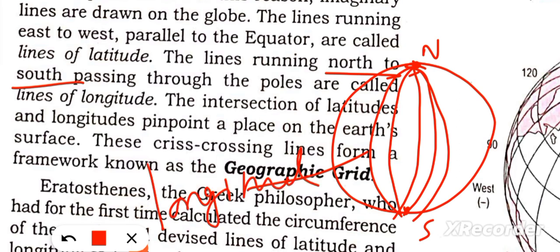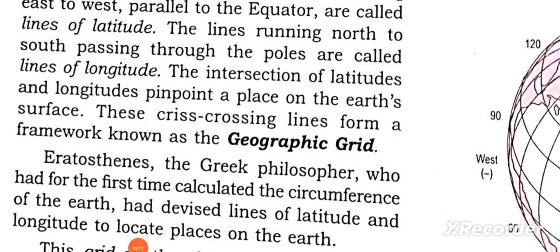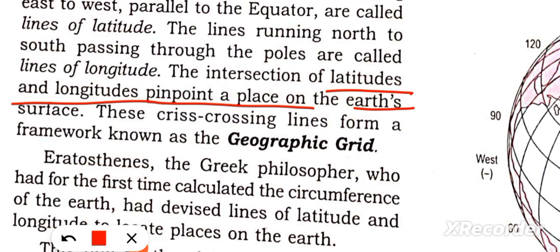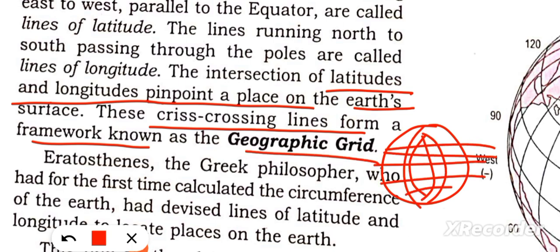Where longitude and latitude intersect, what do we call it? We call it the Geographic Grid. A grid is a criss-cross framework of lines, and this criss-cross framework is called the Geographic Grid.